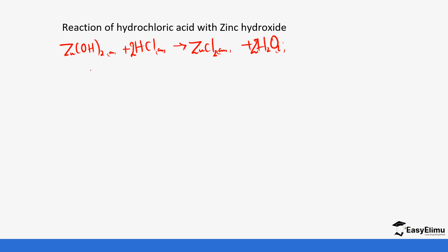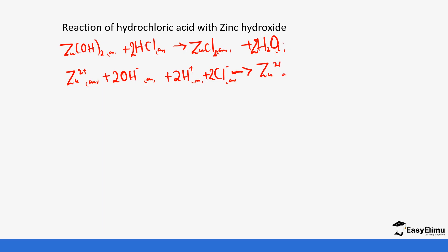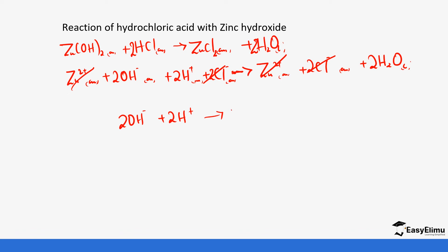The next step is to break the compounds into ions: zinc ions (Zn²⁺) aqueous plus two hydroxide ions (2OH⁻) aqueous, plus two hydrogen ions (2H⁺) aqueous, plus two chloride ions (2Cl⁻) aqueous, which forms zinc chloride — zinc ions (Zn²⁺) aqueous plus two chloride ions (2Cl⁻) aqueous — plus water, which we do not dissociate. Zinc ions are aqueous on both sides — cancel. Hydroxide ions are forming water — cannot cancel. Hydrogen ions combine with hydroxide to form water — cannot cancel. Chloride ions are aqueous on both sides — cancel. We end up with: 2OH⁻ + 2H⁺ → 2H₂O. This is our ionic equation.